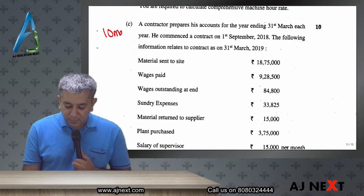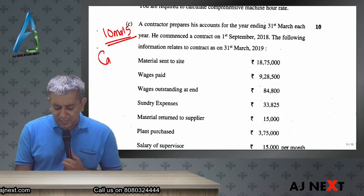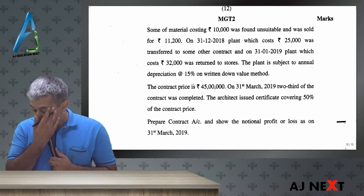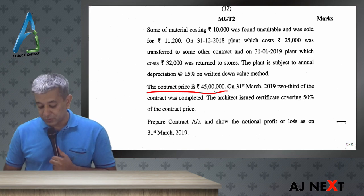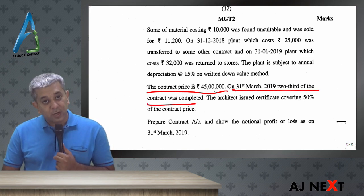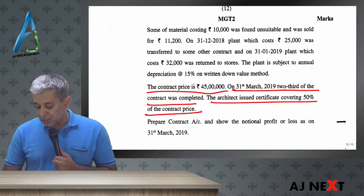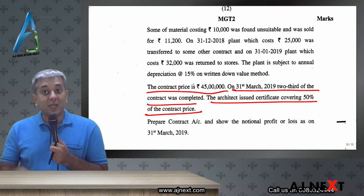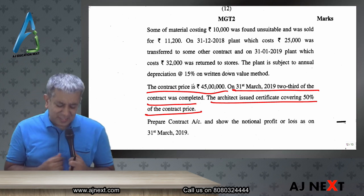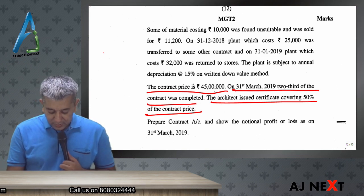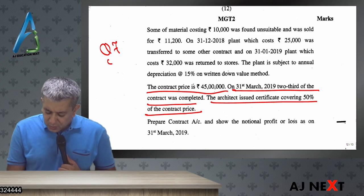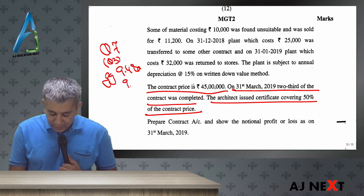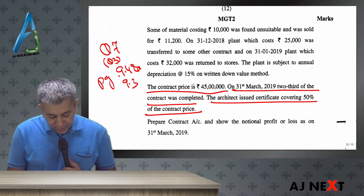Part C of question four was for 10 marks and was from contract costing. The same adjustments we had covered — contract price was 45 lakhs, on 31st December 2019, two-thirds of the contract was completed, but the architect had issued certificates covering 50% of the contract price. So calculating the work uncertified was the main task — work uncertified was always valued at cost. Exact same question. In our books and class, that was question number 7 with small adjustments from question number 3 also, on page numbers 9.4 and 9.3.